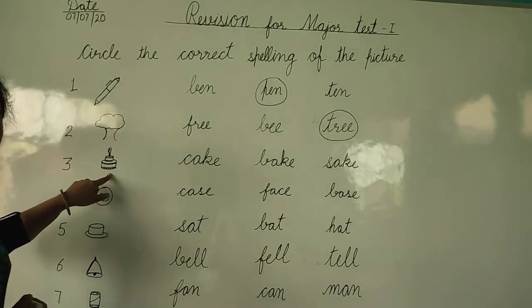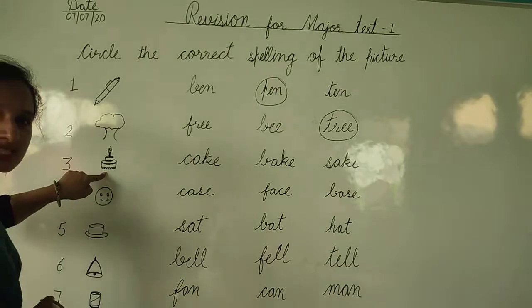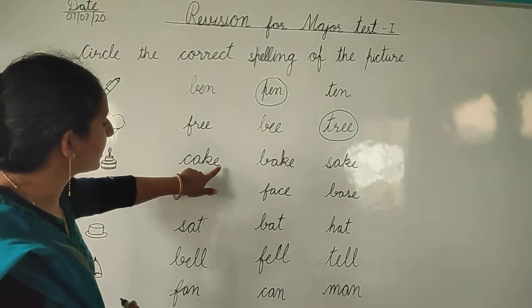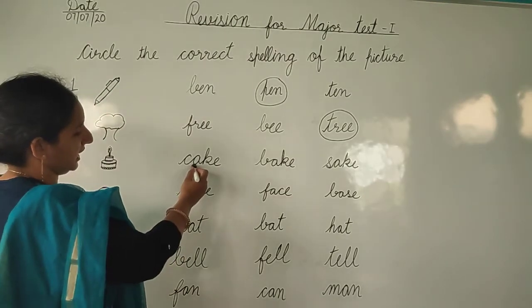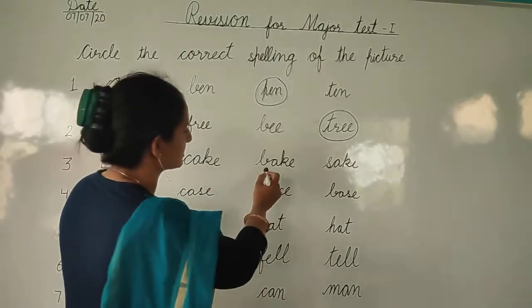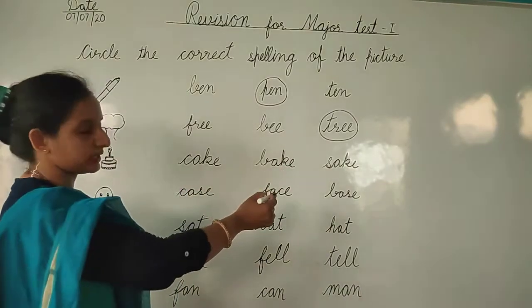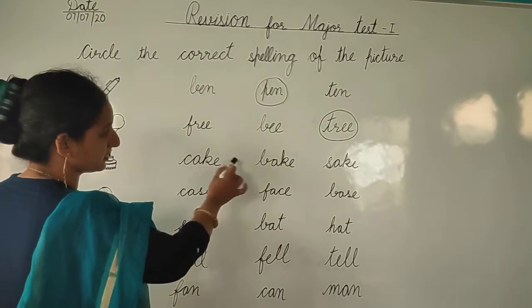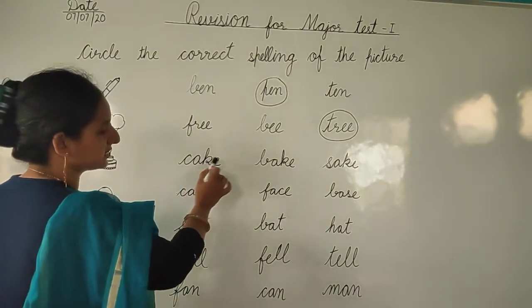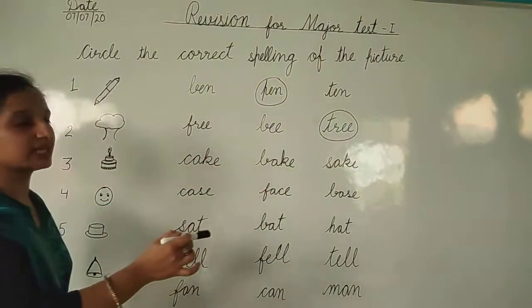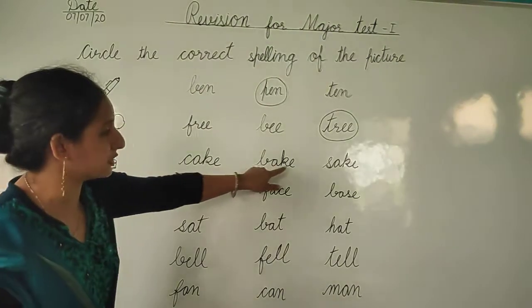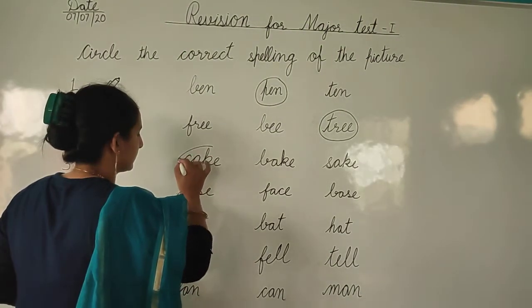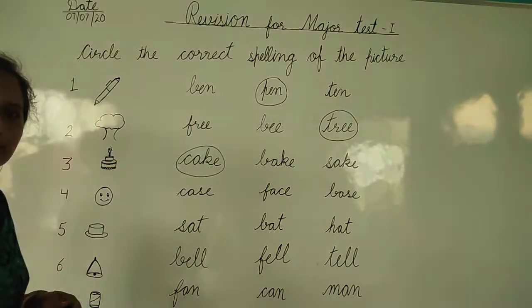Next — look at this picture, what is this? Now start reading the spellings: C-A-A-E-T, B-A-K-E, S-A-K-E. Cape, babe, shape. What is the spelling of this picture? Cape. Where is cape? Here — C, A, K, T. So we will make a circle here.